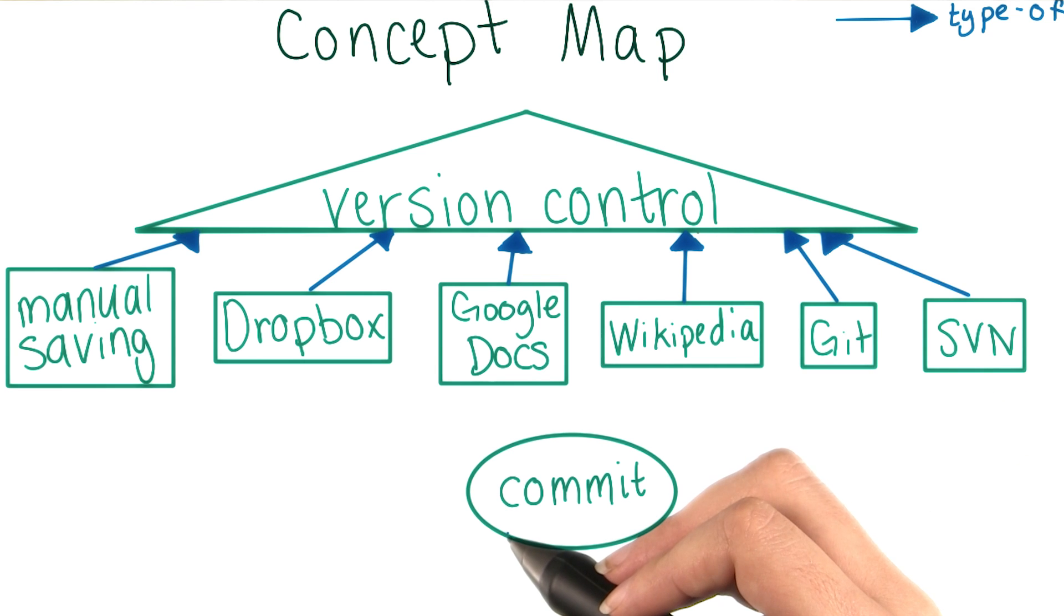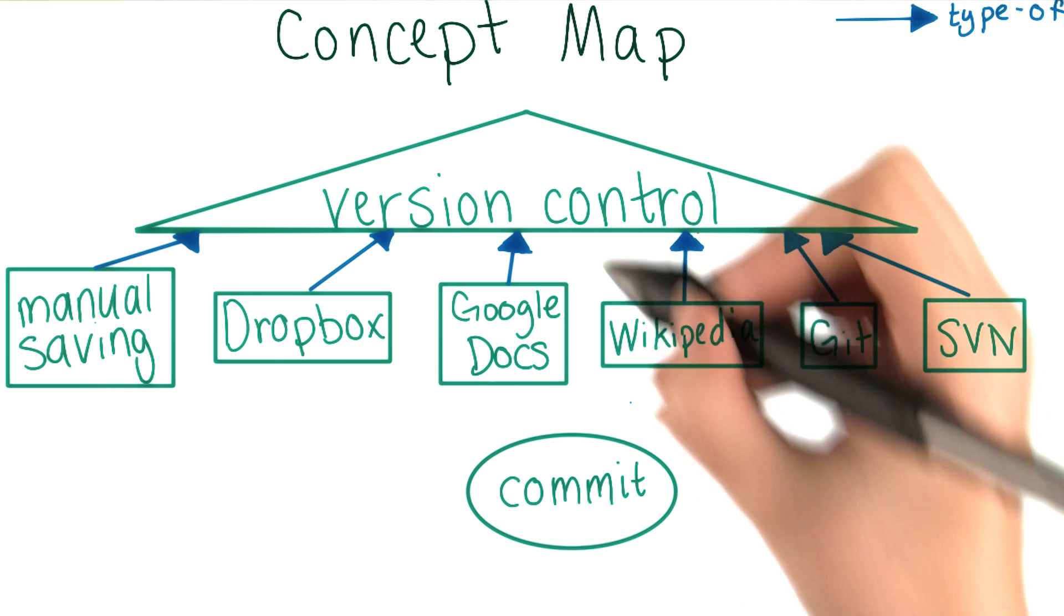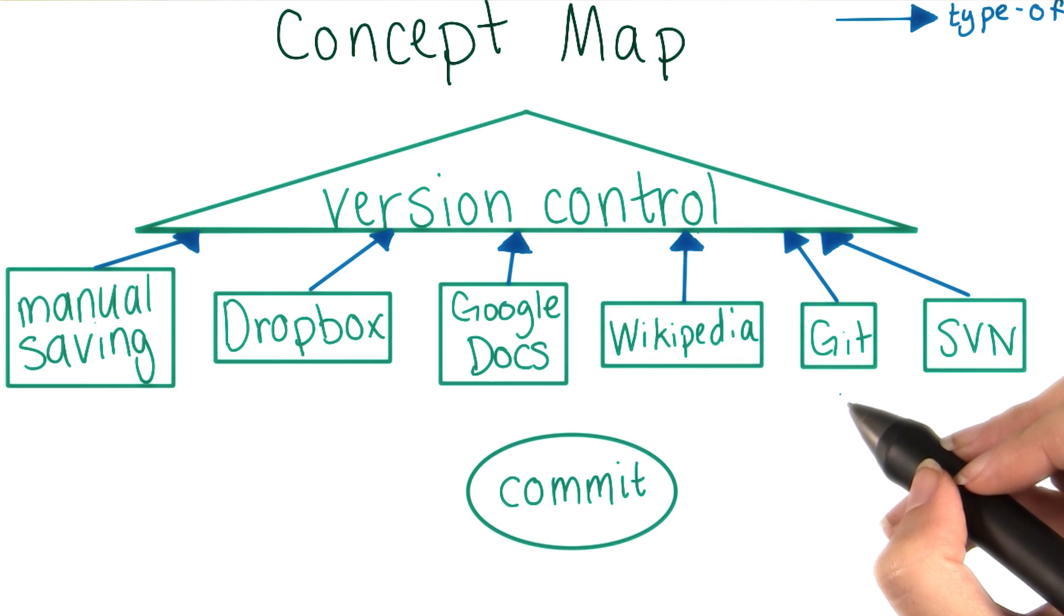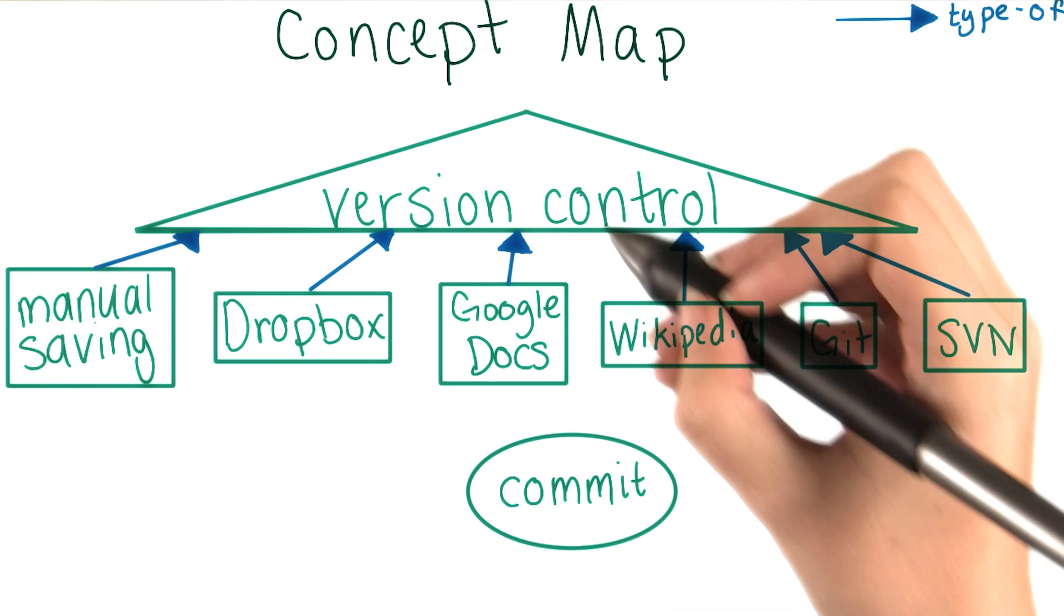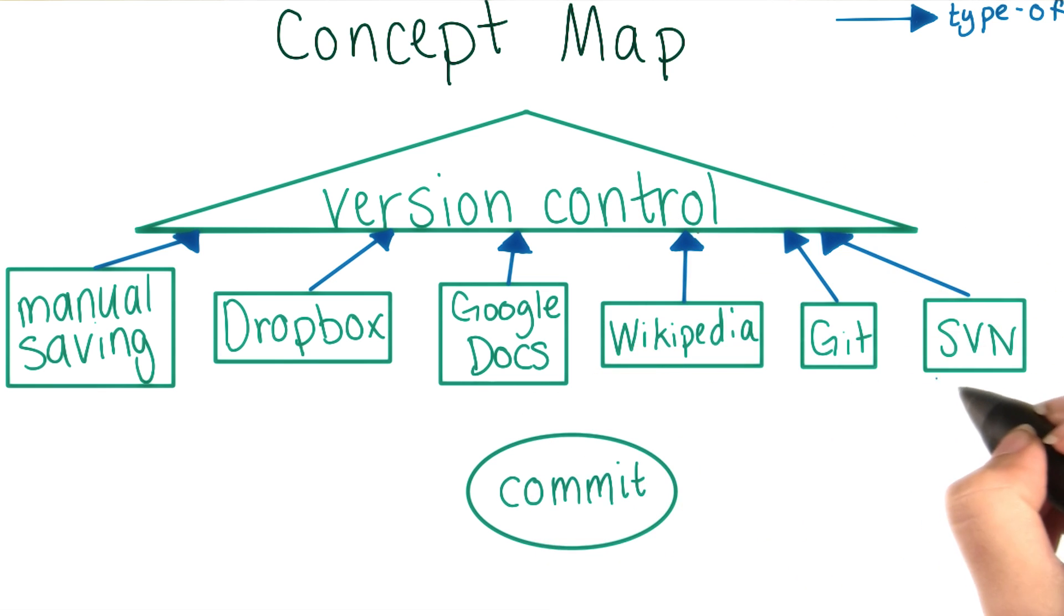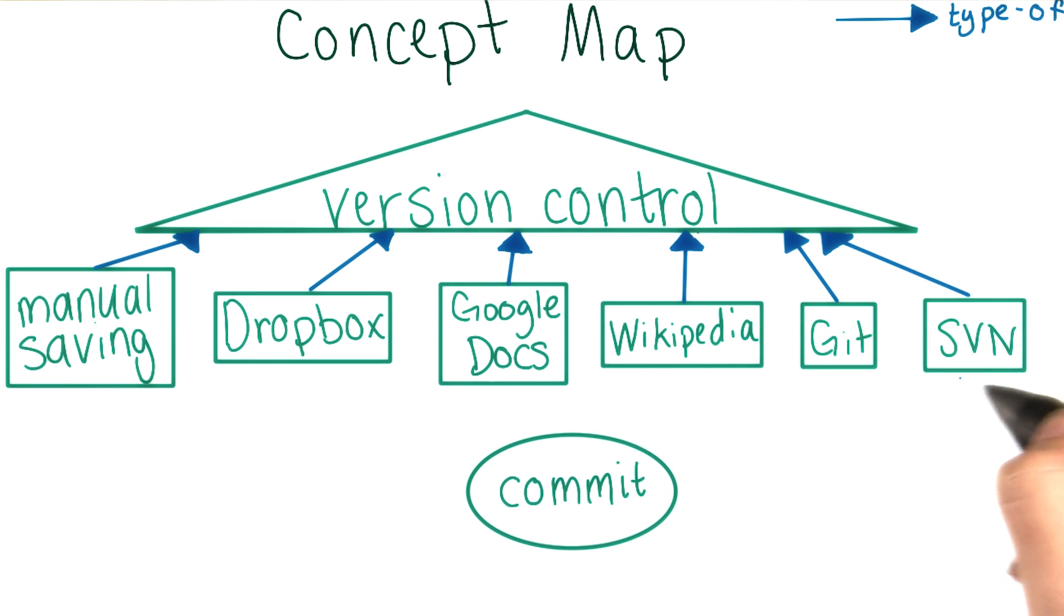The most recent concept we've come across is the git commit. This new concept is not directly related to version control. It connects through the git system. And if we drew lines between every second order connection, our map would quickly get out of hand. Some of these other systems also involve some similar concepts to commits, but they don't actually call them that. So we'll just keep it connected with git.